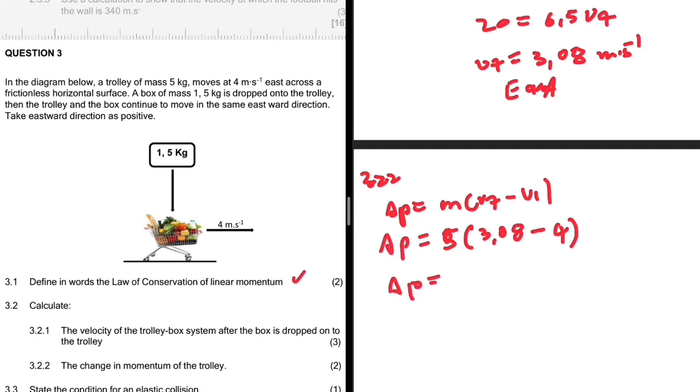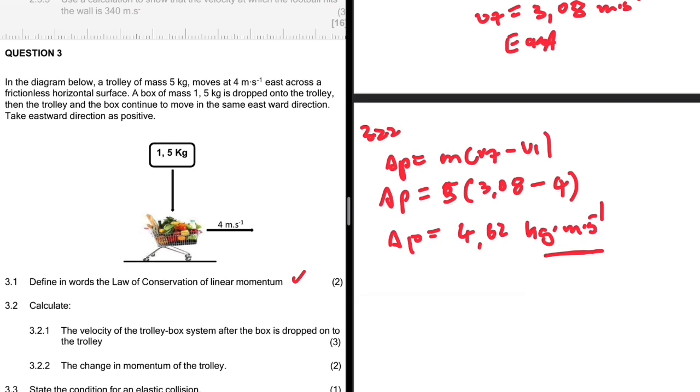The initial velocity is 4 meters per second in the same direction. So the change in momentum therefore is -4.62 kg meters per second. Do you see the difference? When I'm talking about impulse, I use newton seconds. When I'm talking about change in momentum, I use kg meters per second. That's how we're supposed to do it.